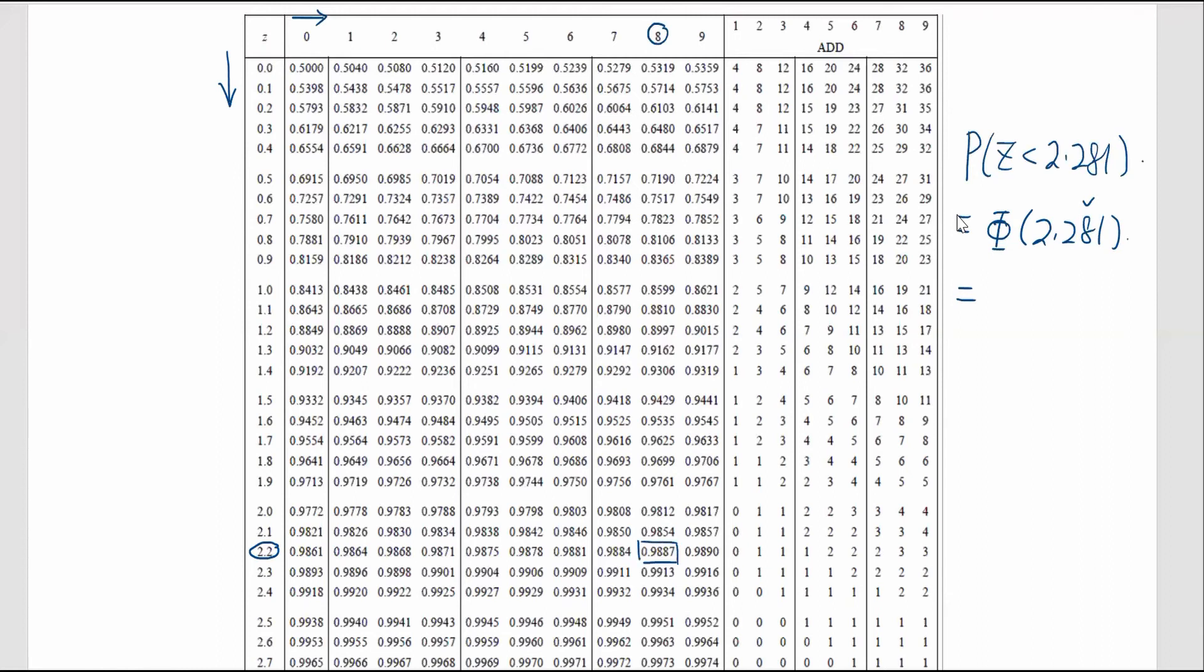All right. So that is the probability that we want. And the last decimal place is 1. You have to read from the smaller column here. And the value we have is 0. So in order to get the probability, it should be 0.9887 plus 0.0000, which is just 0.9887.